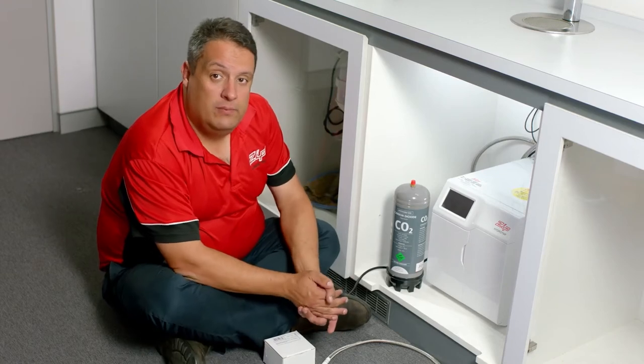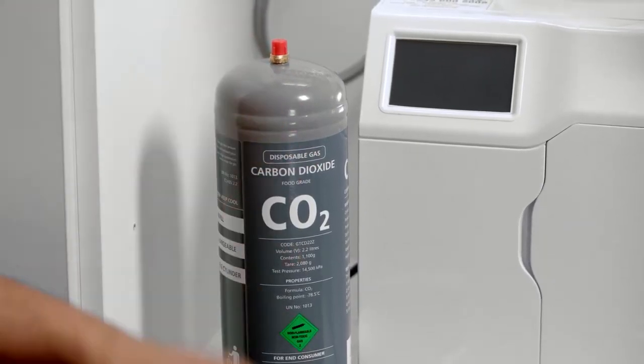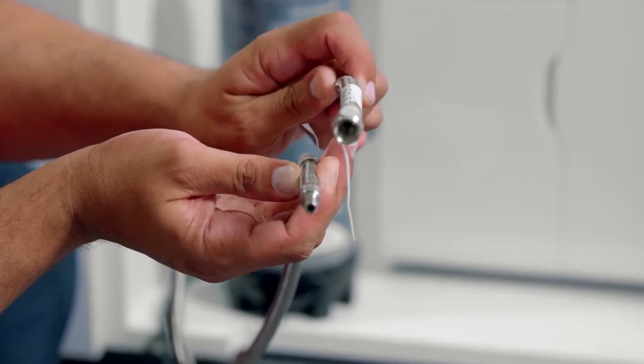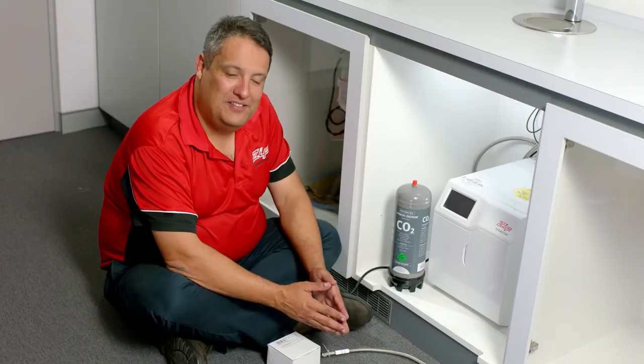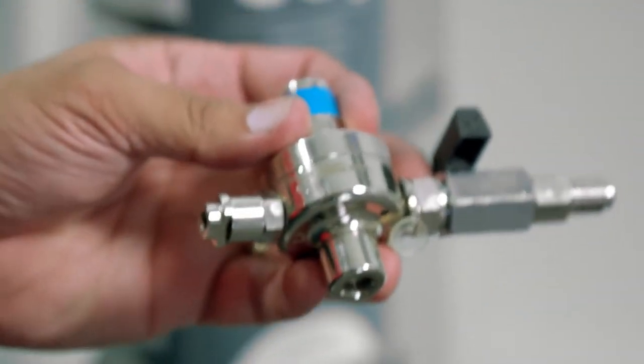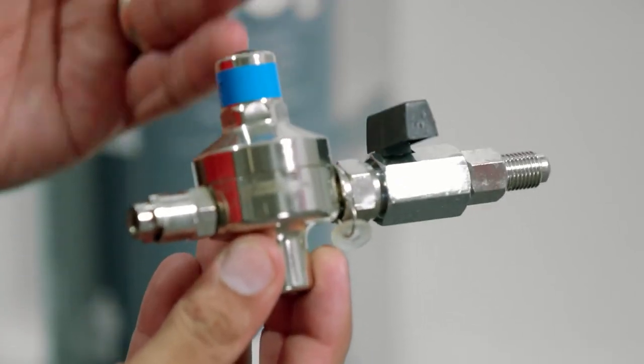Because this is a sparkling water unit, you will also receive a CO2 bottle regulator and CO2 hose. This should all be assembled before installation in the cupboard. To assemble, remove the regulator from the box. This is a preset regulator that is set to 300 kPa.